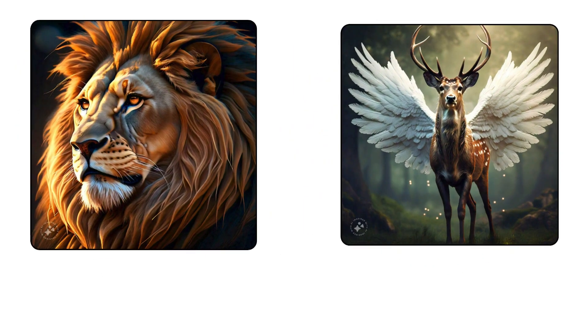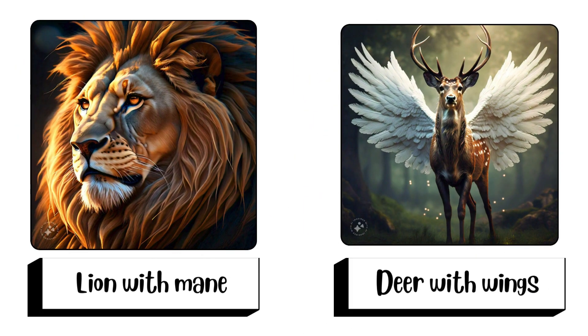Which one is incorrect? A lion with a mane, or a deer with wings?